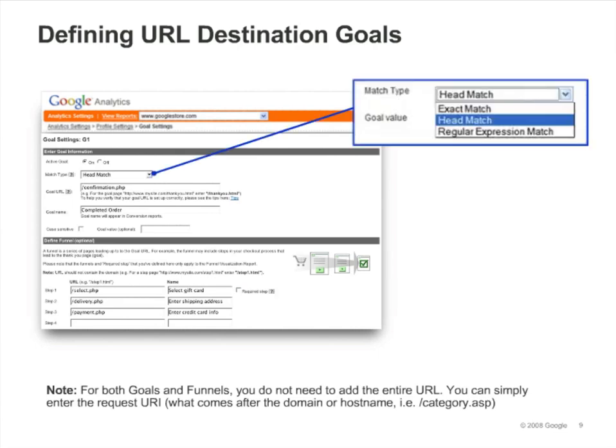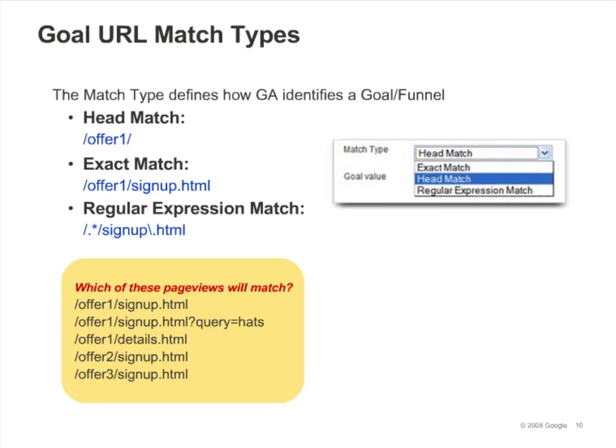Next, we'll talk about the match type setting. The match type defines how Google Analytics identifies a goal or funnel step. You have three choices for the match type option. Head match is the default. It indicates that the URL of the page visited must match what you enter for the goal URL, but if there is any additional data at the end of the visitor's URL, the goal will still be counted. For example, some websites append a product ID, a visitor ID, or some other parameter to the end of the URL — head match will ignore these.